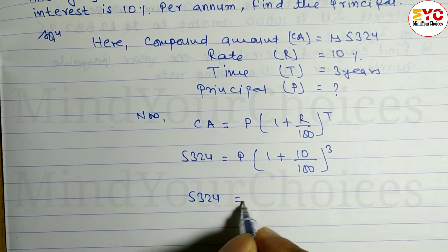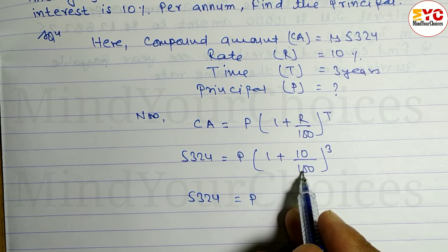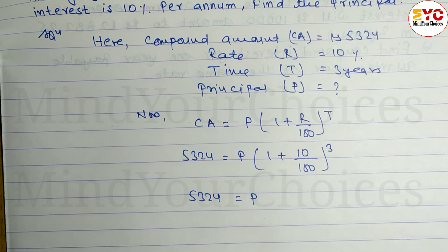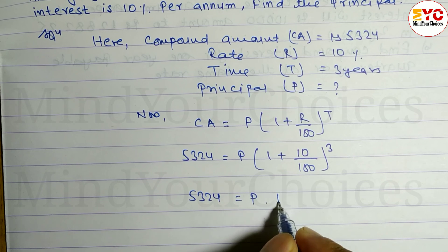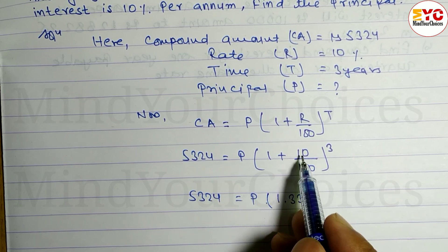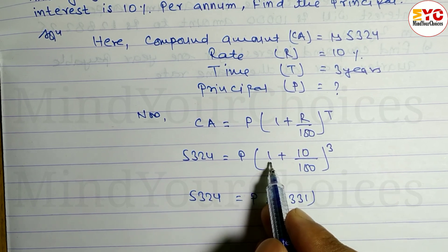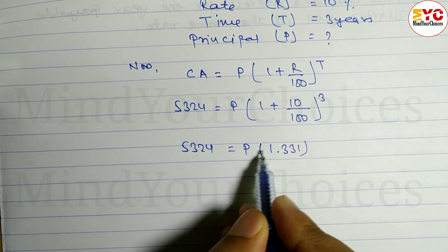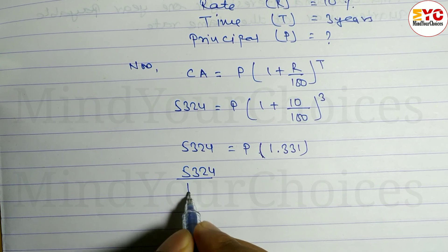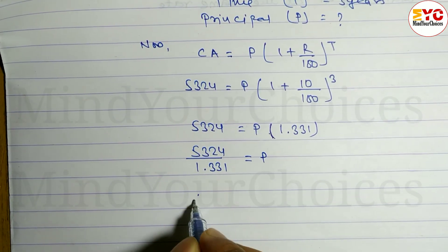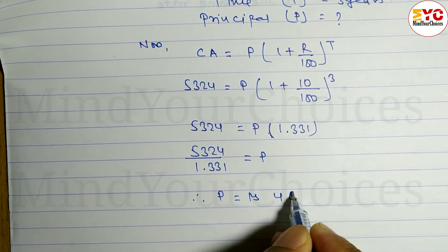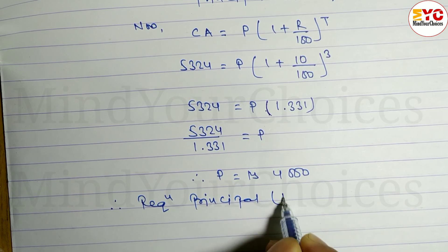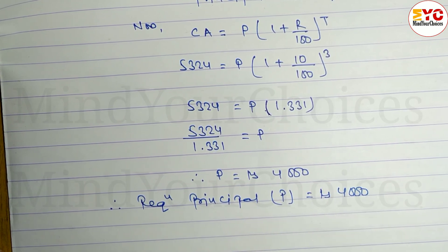So 5324 is equal to P times (10 divided by 100 gives 0.1, plus 1 gives 1.1) to the power 3, and 1.1 to the power 3 gives 1.331. Now dividing: 5324 divided by 1.331 is equal to P. Therefore P is equal to four thousand. The required principal P is equal to rupees 4000.